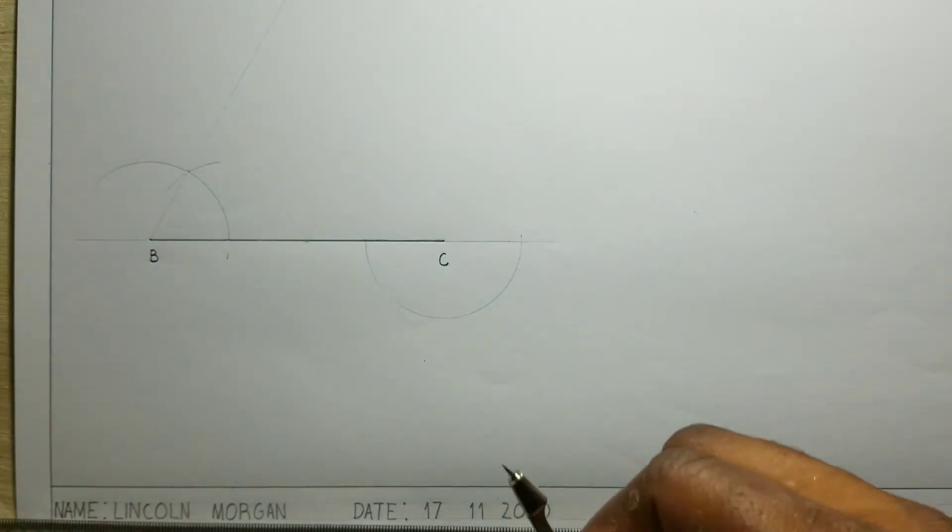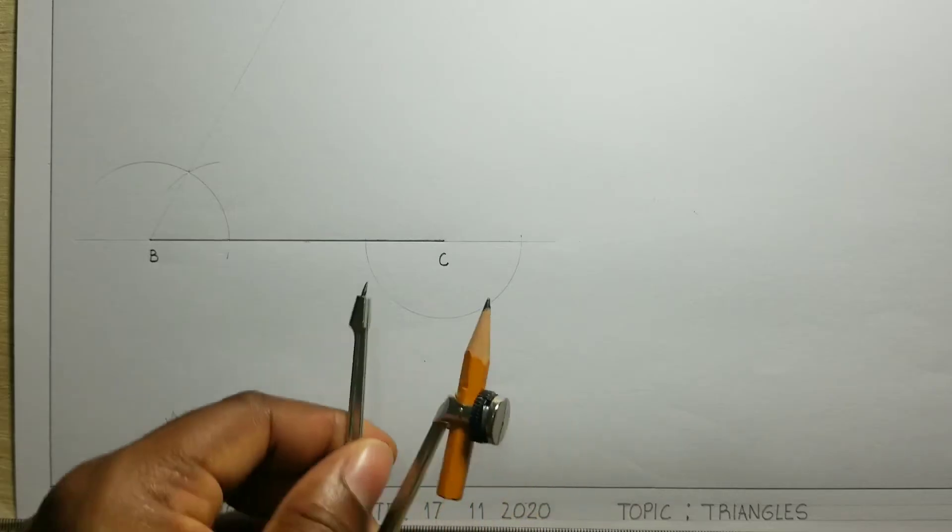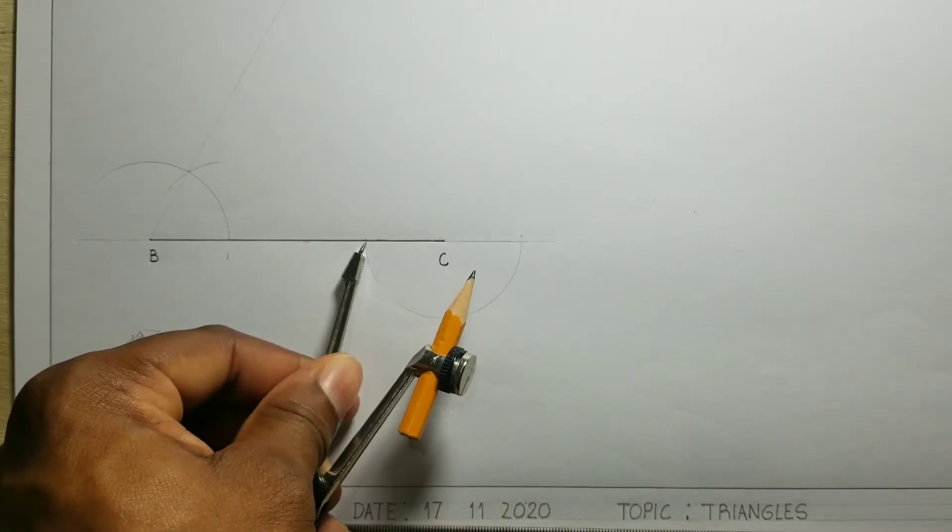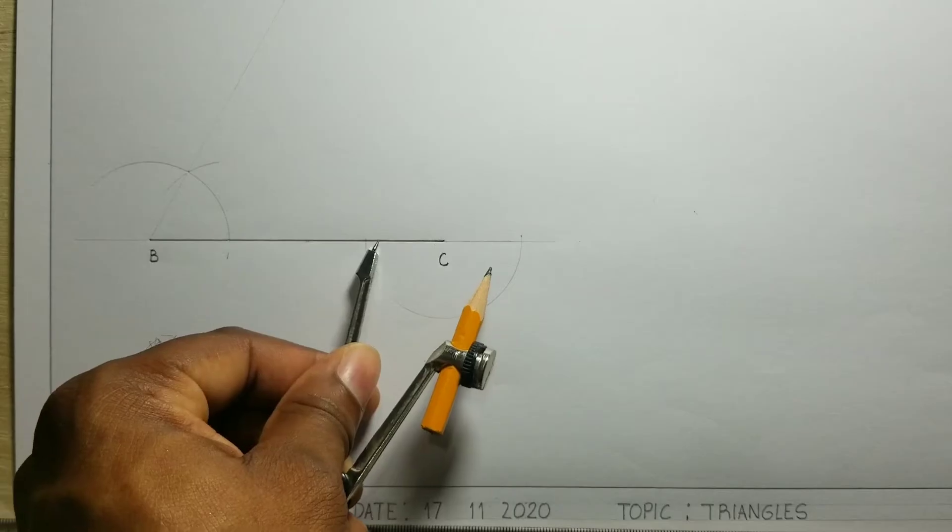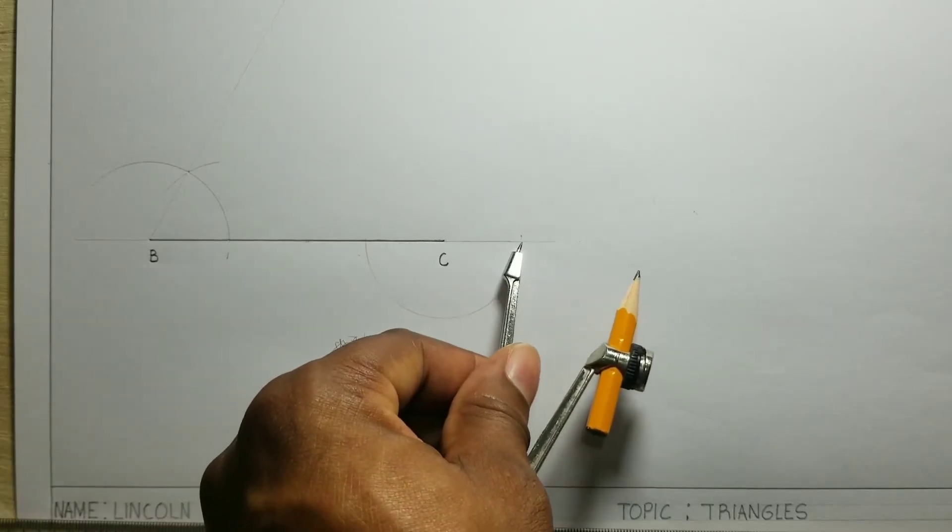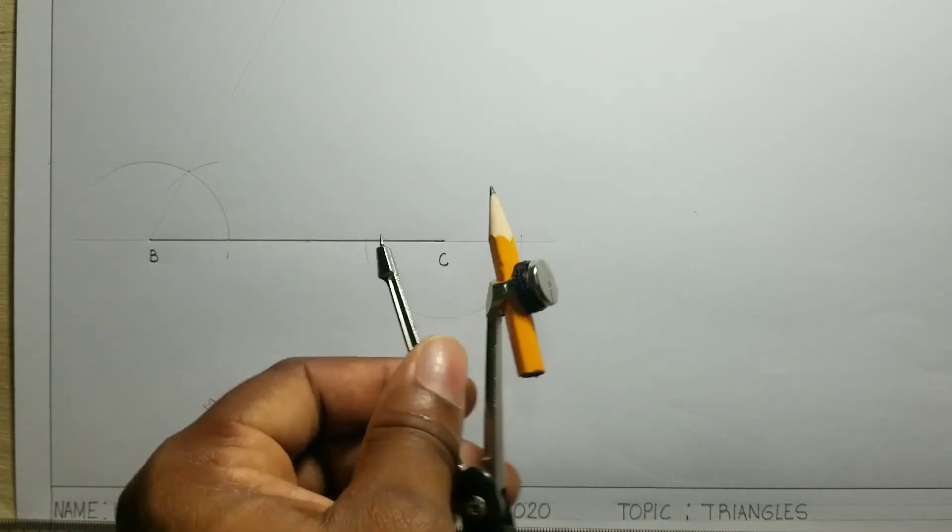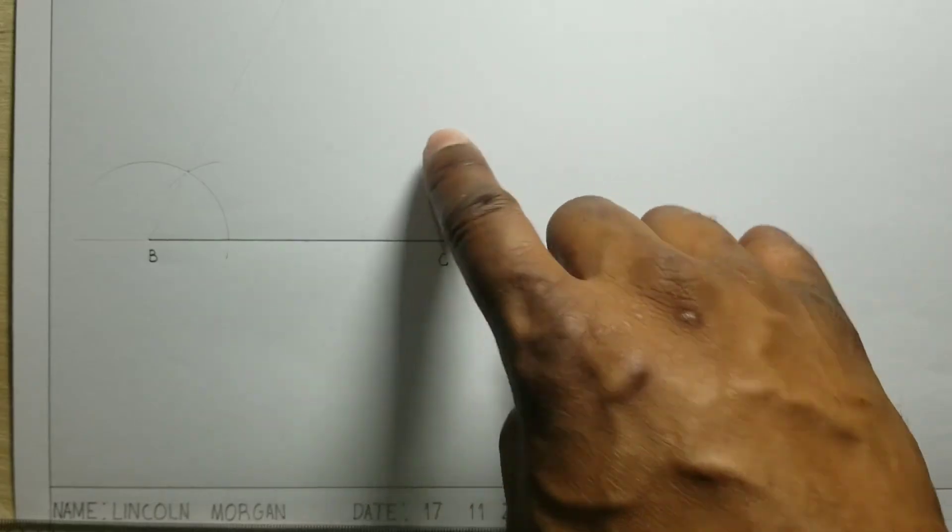I will now open my compass just a little more. And I will use these two points, the points where the semicircle intersected this line, to get intersecting arcs above.